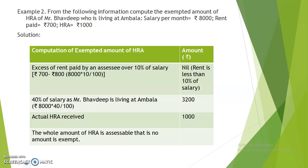The second condition — 40% of salary as Mr. Bhavdeep is living at Ambala — gives Rs. 3,200. Actual HRA received by him is Rs. 1,000. So in this case, the whole amount of HRA is assessable. There is no exemption allowed to Mr. Bhavdeep.